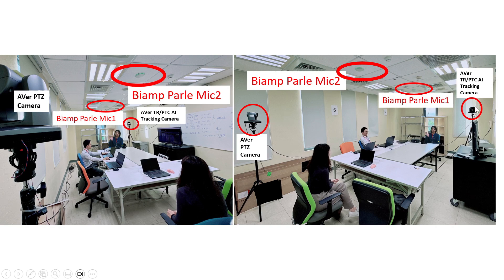We also set up the AVER TR-PTC AI GEN camera in the front to capture Paul and Tina. When Tina is talking, it will also trigger AI human tracking on the AVER PTZ camera. The AVER PTZ camera is set up on the back side to capture Grace.